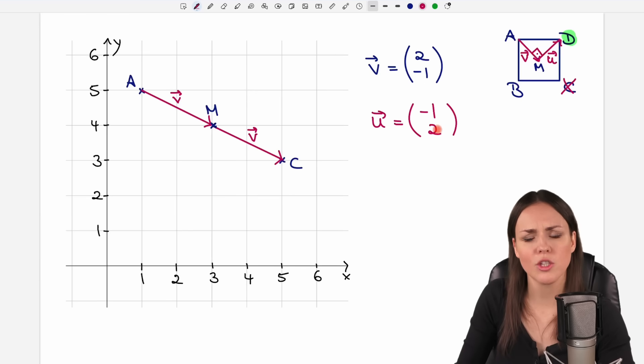And this vector would also be perpendicular to this one. But I prefer positive numbers, so I make the -1 positive. You can always check if these vectors are perpendicular to each other if you create the dot product of these two vectors. And that has to be zero.